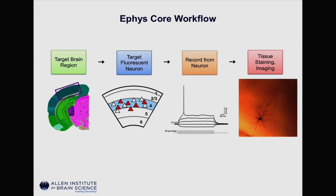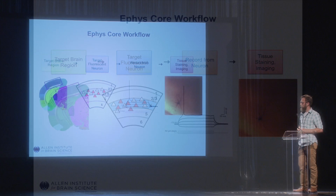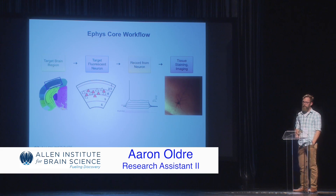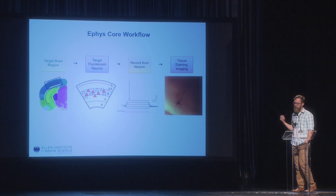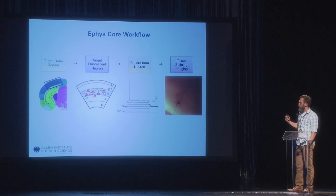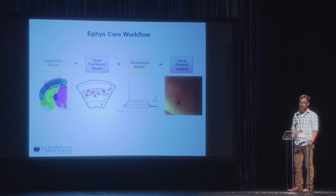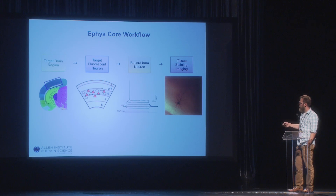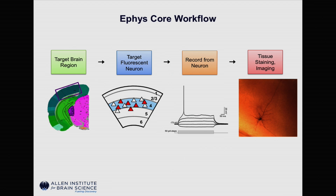I'm Erin with the EFIS Core, which was introduced yesterday by Jim and his team talk, and Kristin and Dijon and their poster. We are the primary consumers of block-face imaging — it's crucial to our workflow where we're getting fresh tissue from Shana and her team. It's coming through and we're going to target our region, currently visual cortex, going in looking for a fluorescent neuron, and then using glass pipettes to record the electrophysiology of that cell, staining it or filling it with a stain for imaging.